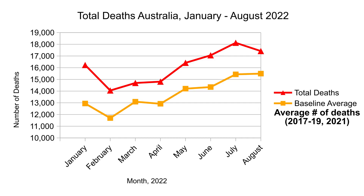According to the ABS, deaths in 2020 were significantly lower than expected, and therefore their inclusion would significantly lower the average and would artificially indicate higher than expected mortality. But even with that exclusion, we can see there are still significant excess deaths for every month this year.